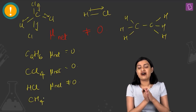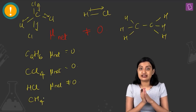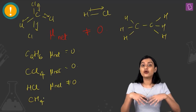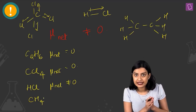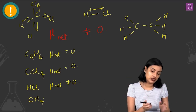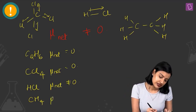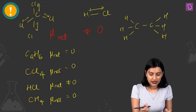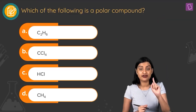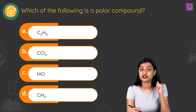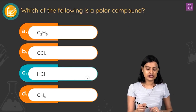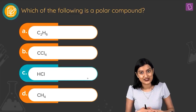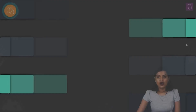CH4 is very similar to CCl4 — the C–H bonds have very low electronegativity difference, and by vector addition all bond moments cancel, giving μ_net = 0. Since only HCl gives μ_net ≠ 0, option C (HCl, hydrogen chloride) is the correct answer.